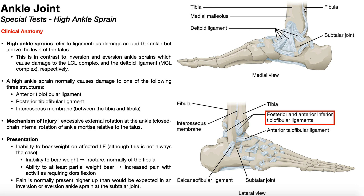There are several ligaments that connect the tibia and the fibula. Distally, the tibia and the fibula form a concavity called the ankle mortis, which articulates with the bone beneath it called the talus. The joint between the talus and the ankle mortis of the tibia and fibula is called the talocrural joint.